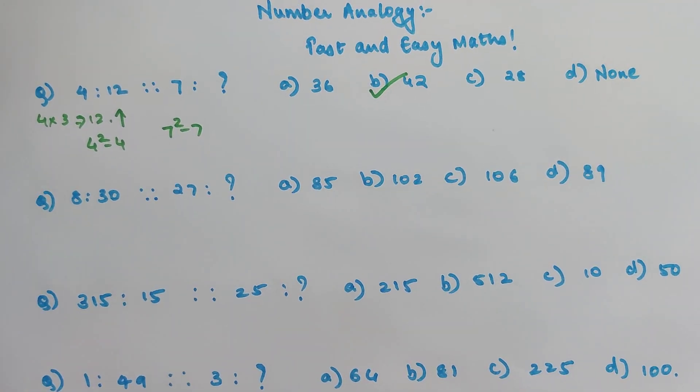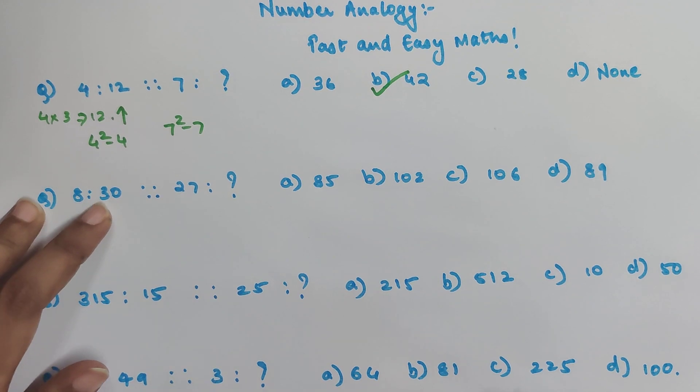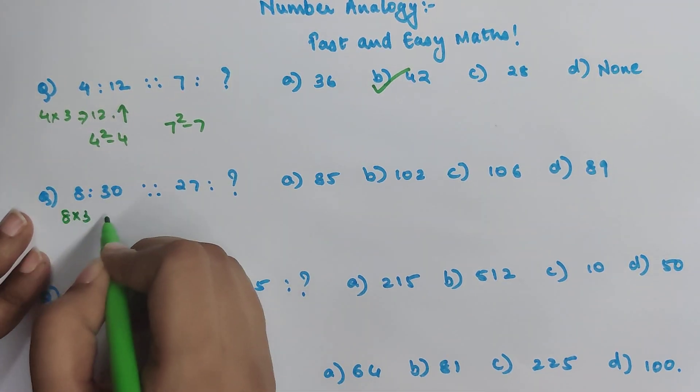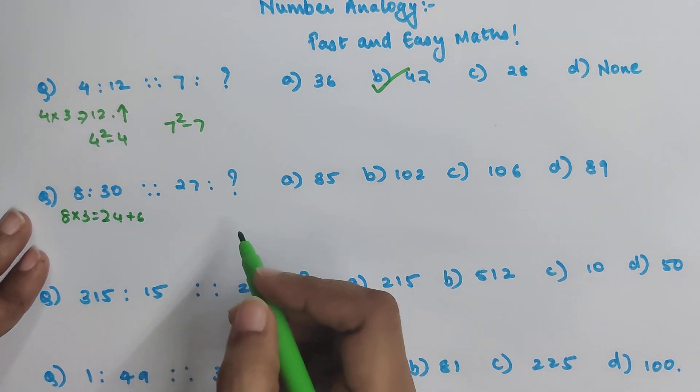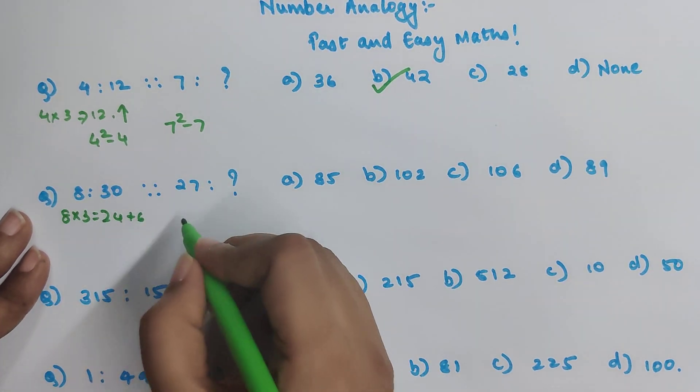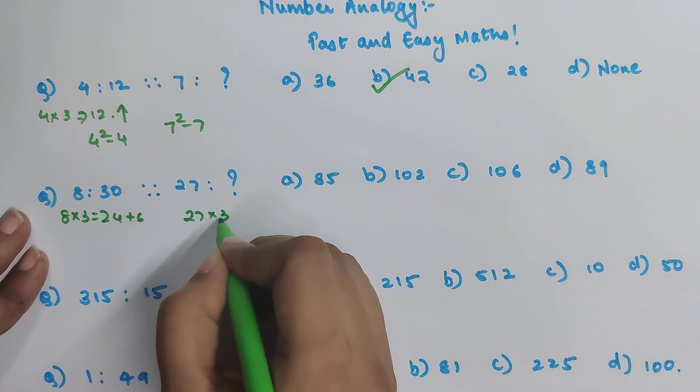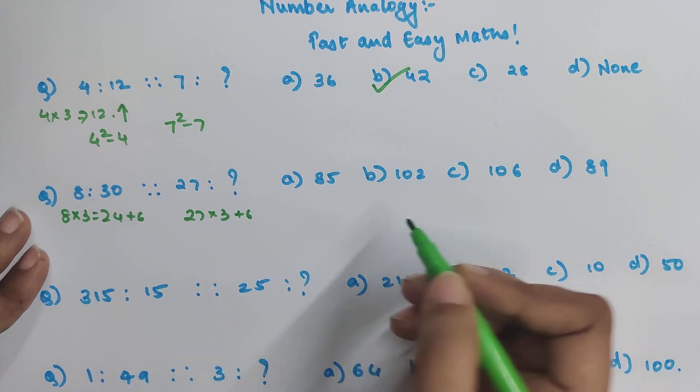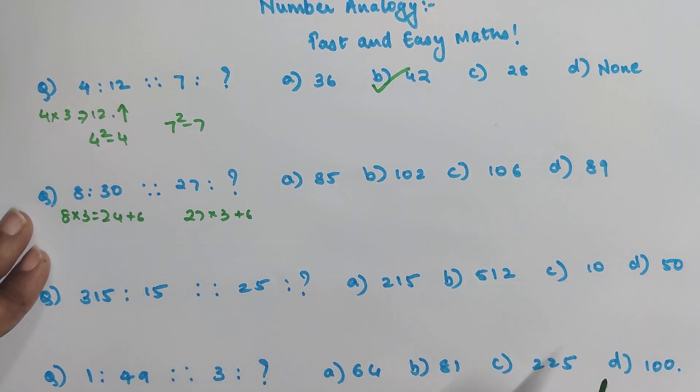Okay, now the next one: 8 is to 30. So now understand, 30 and 8, 30 doesn't come in 8's table but I know that 8 into 3 gets me 24 plus 6 will get me 30. So similarly 27 into 3 plus 6.